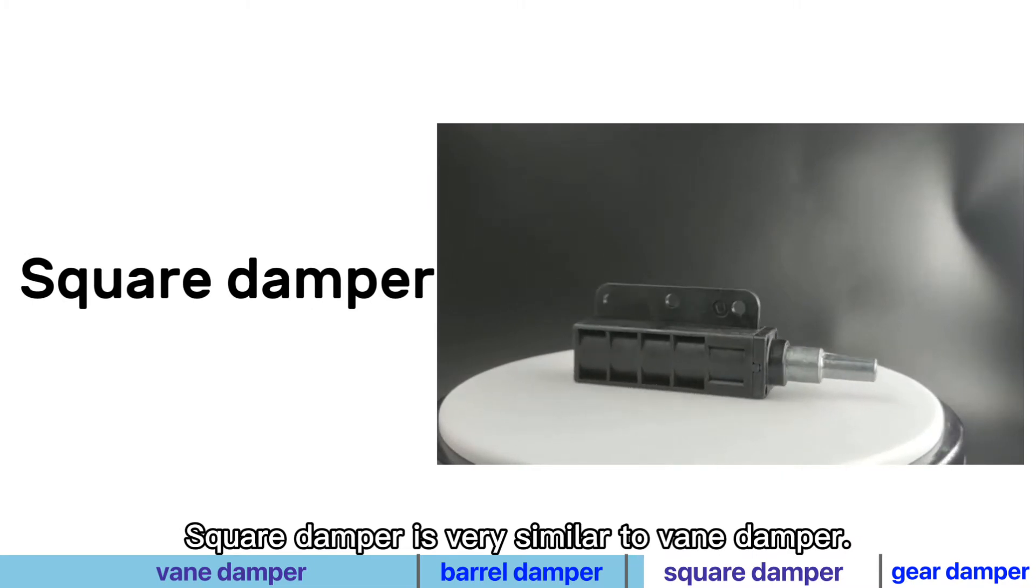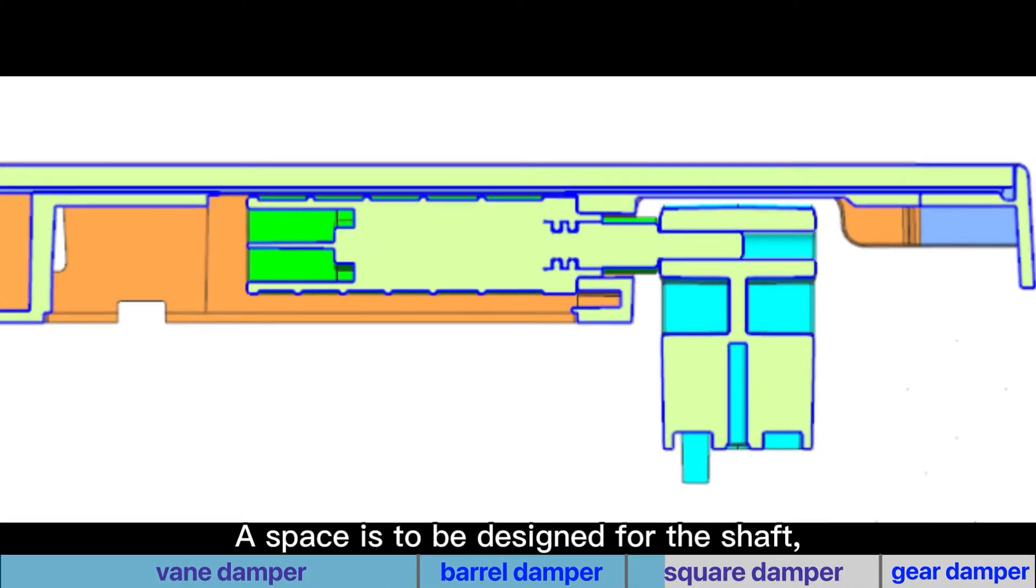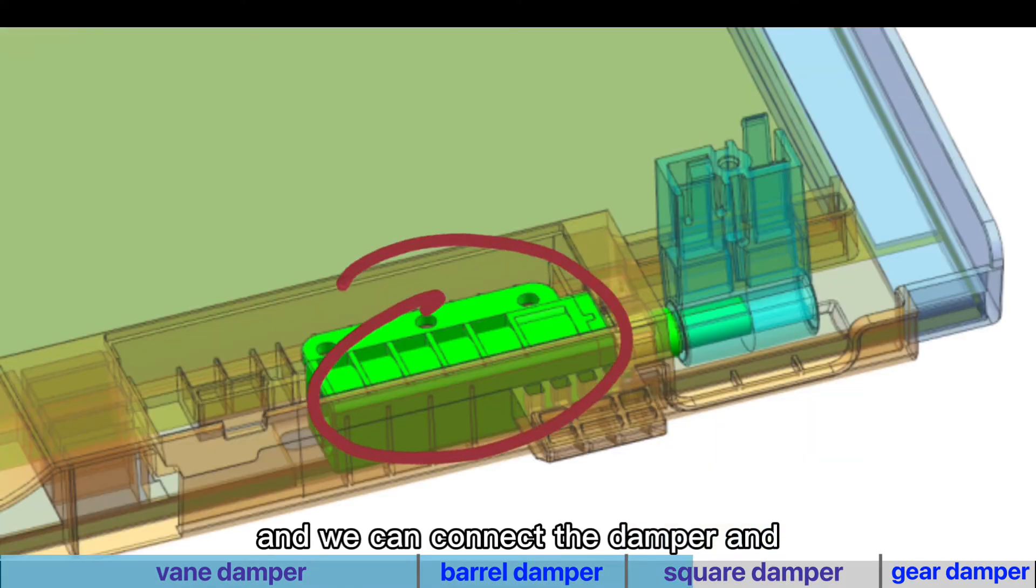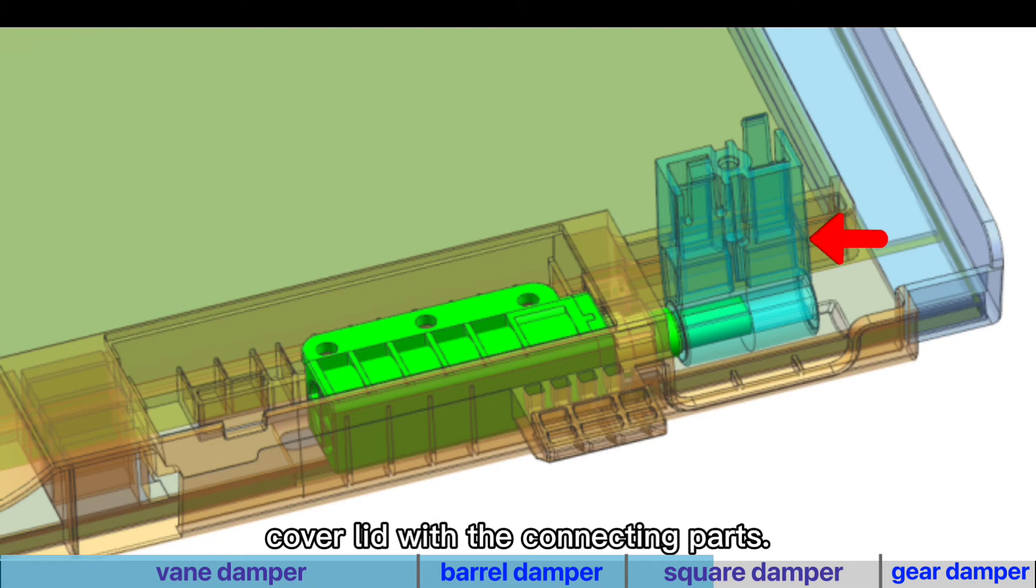Square damper is very similar to vane damper. A space is to be designed for the shaft, and we can connect the damper and the cover lid with the connecting parts.